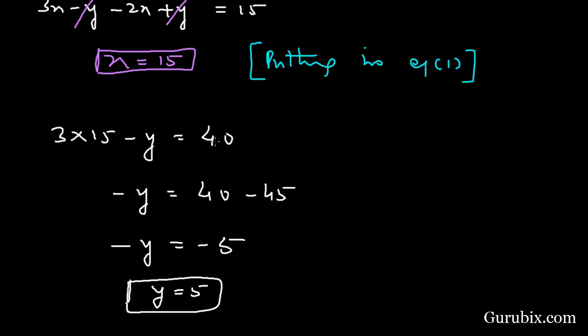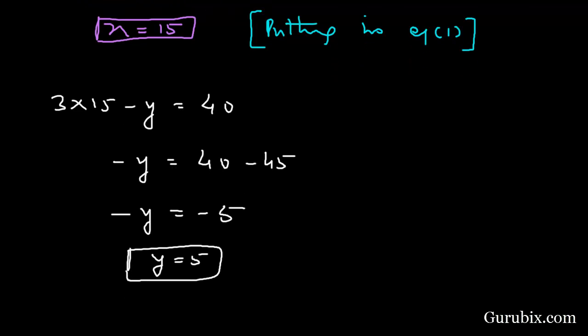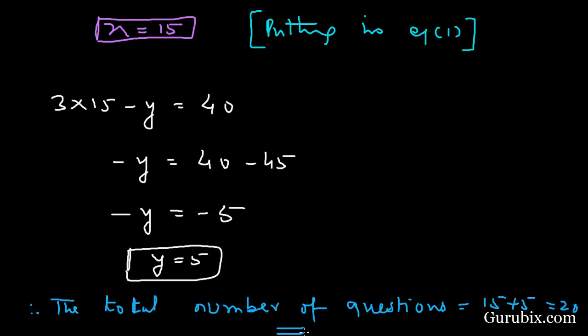So the number of correct answers are 15 and the number of incorrect answers are 5. Therefore, the total number of questions equals 15 plus 5, this means 20. So this is the solution of the question, thank you.